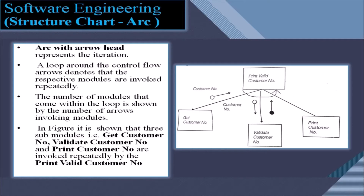For example, three submodules — get customer number, manipulate customer number, and print customer number — are invoked repeatedly by the 'print and validated number' module.